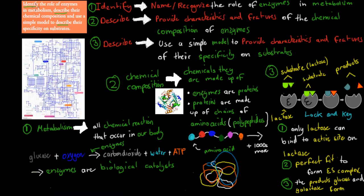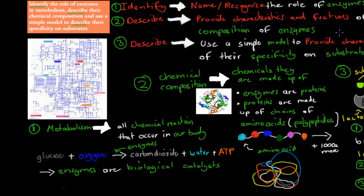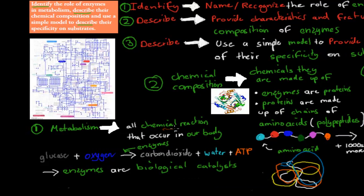The first dot point says: identify the role of enzymes in metabolism, describe their chemical composition, and use a simple model to describe their specificity on substrates. There are three verbs, so I'll go through each of them separately. The first one is 'identify', which means name or recognize the role of enzymes in metabolism. Metabolism is basically all the chemical reactions that occur in our body — all of them together are called our metabolism.